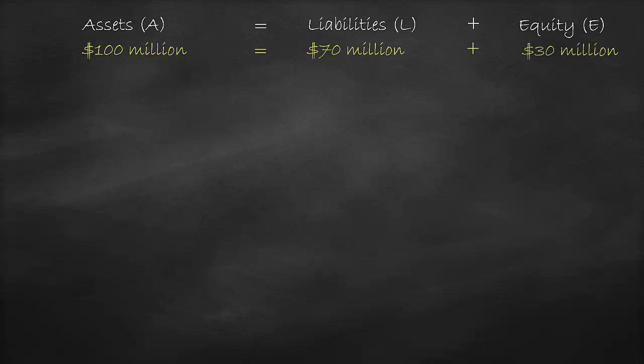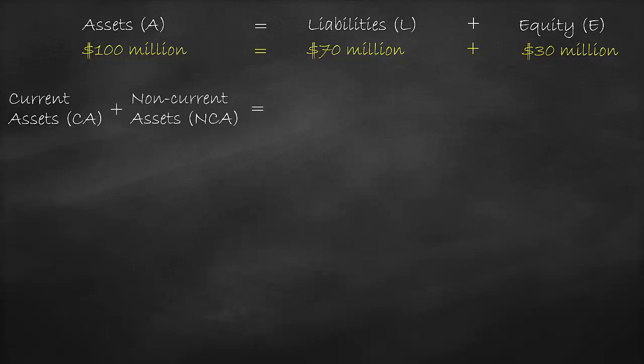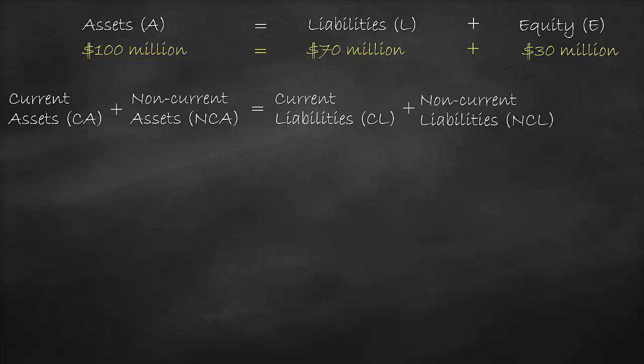We then divide assets into short-term and long-term, which are current assets and non-current assets. We do the same for liabilities by dividing them into short-term and long-term, which are current liabilities and non-current liabilities. Finally, we have equity, which is always long-term, so we just write it as equity.